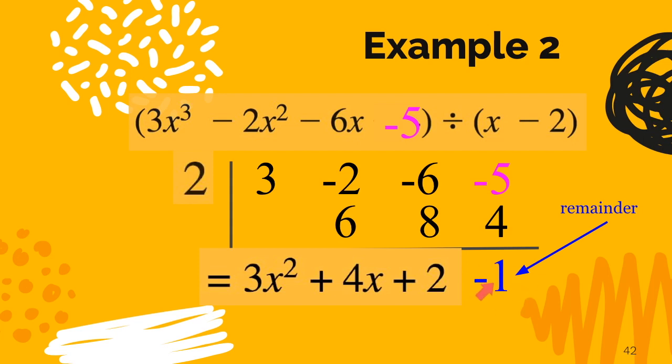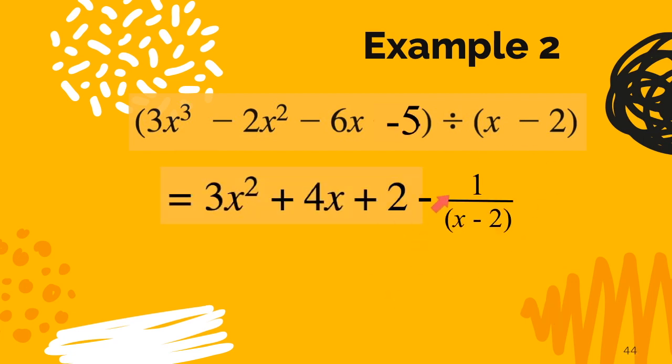Well what does that mean about our answer? We still get the 3x squared plus 4x plus 2 but we have an extra part here. We would have a fraction at the end of this. We would have a negative 1 over x minus 2. So now you see if you have a remainder when you do synthetic division you're going to need to write your answer with a fraction at the end.